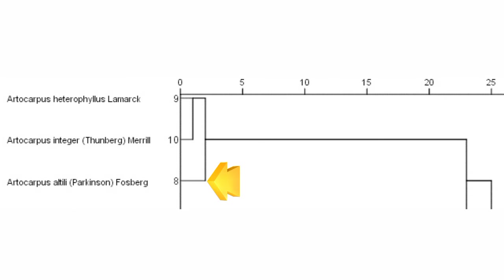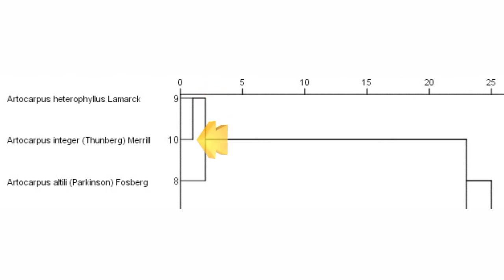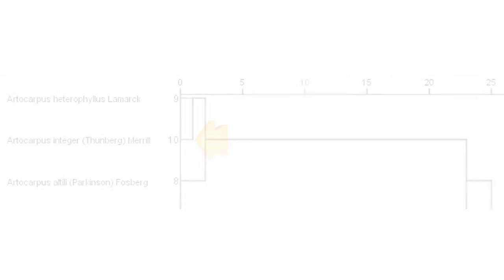Artocarpus altilis was differentiated based on the branch leaves — most leaves represented with pinnate deeply-lobed leaves on a mature tree. In comparison, Artocarpus heterophilus and Artocarpus integer have branchlets with entire leaves on a mature tree. The difference between Artocarpus heterophilus and Artocarpus integer was in the fruit syncarp size, as the syncarp of Artocarpus heterophilus is more significant in size than Artocarpus integer. The syncarp of Artocarpus heterophilus is around 25 to 50 cm in diameter, while the syncarp of Artocarpus integer is around 10 to 15 cm in diameter.